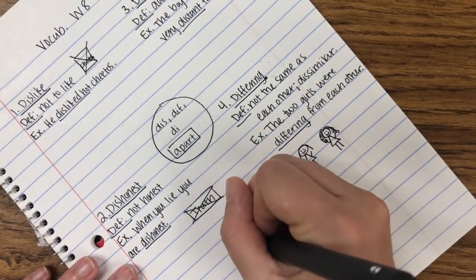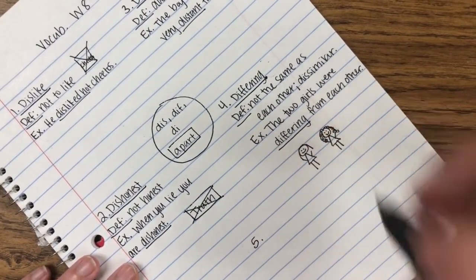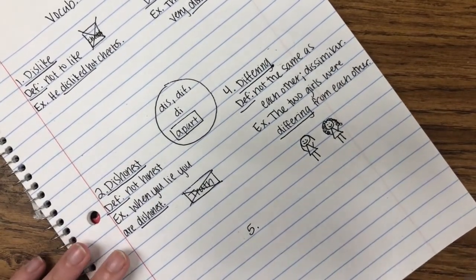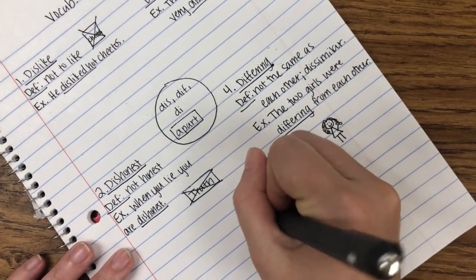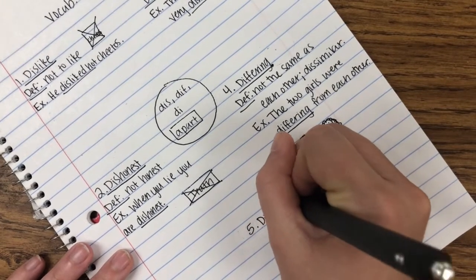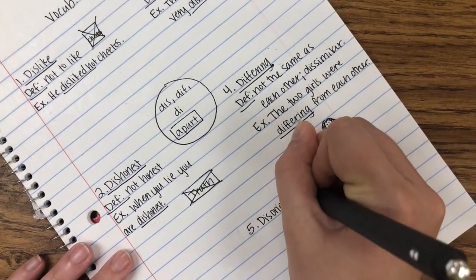And then finally, we have our fifth word, which is disorientation. Disorientation. That's kind of a bigger word. Disorientation.